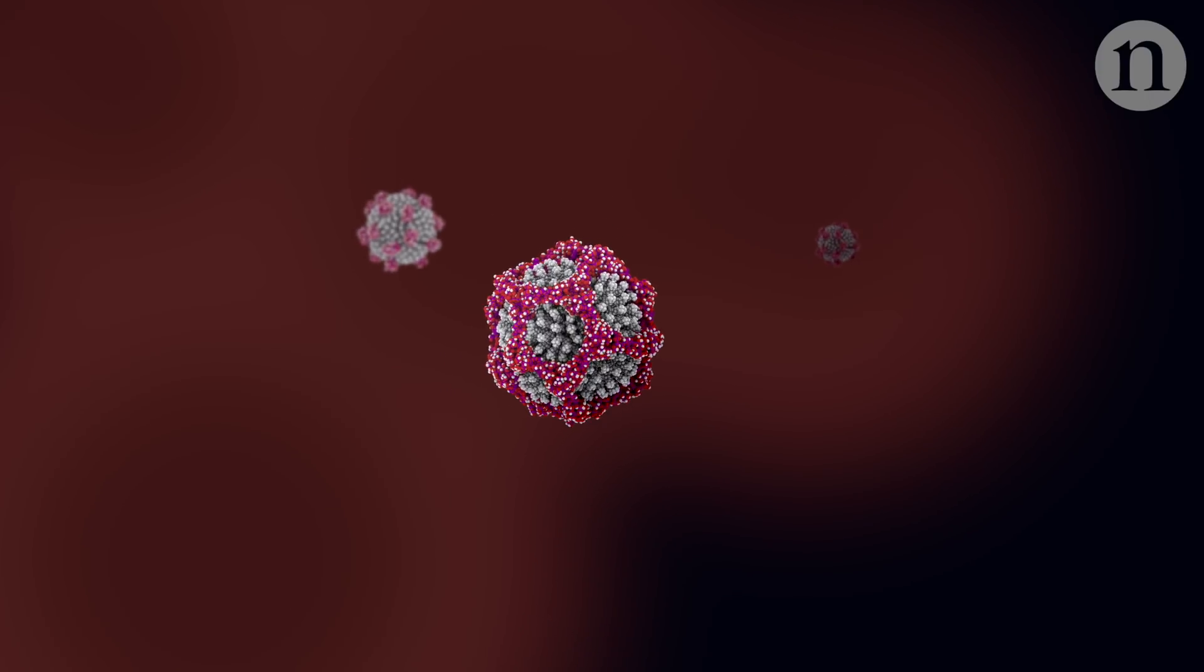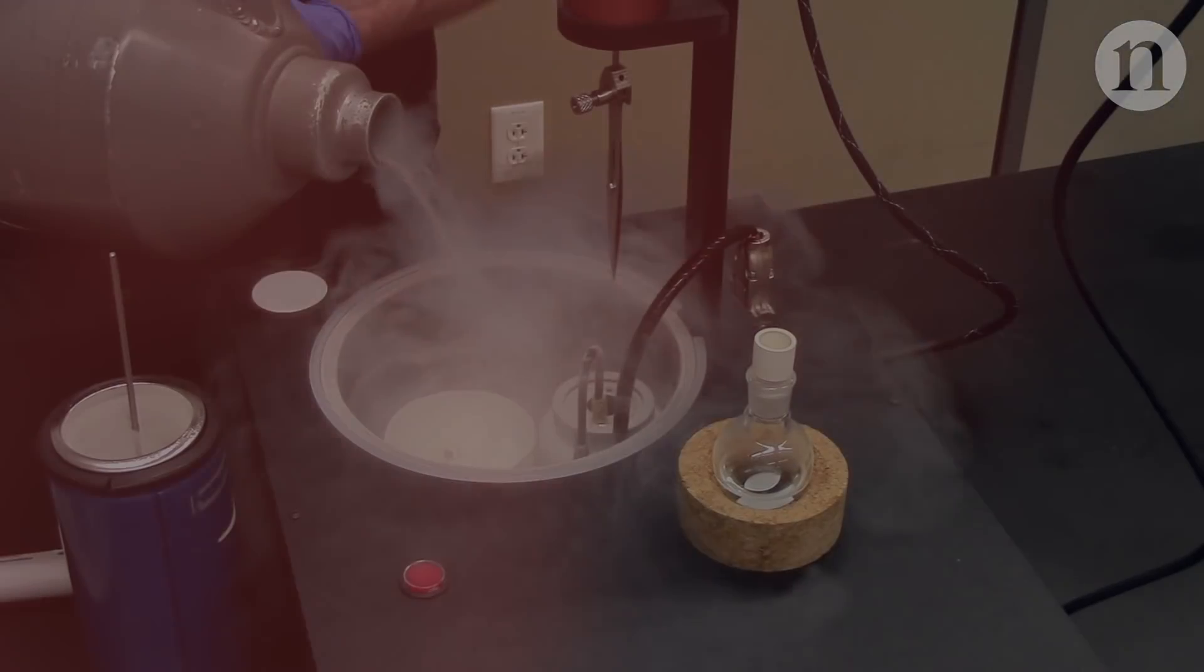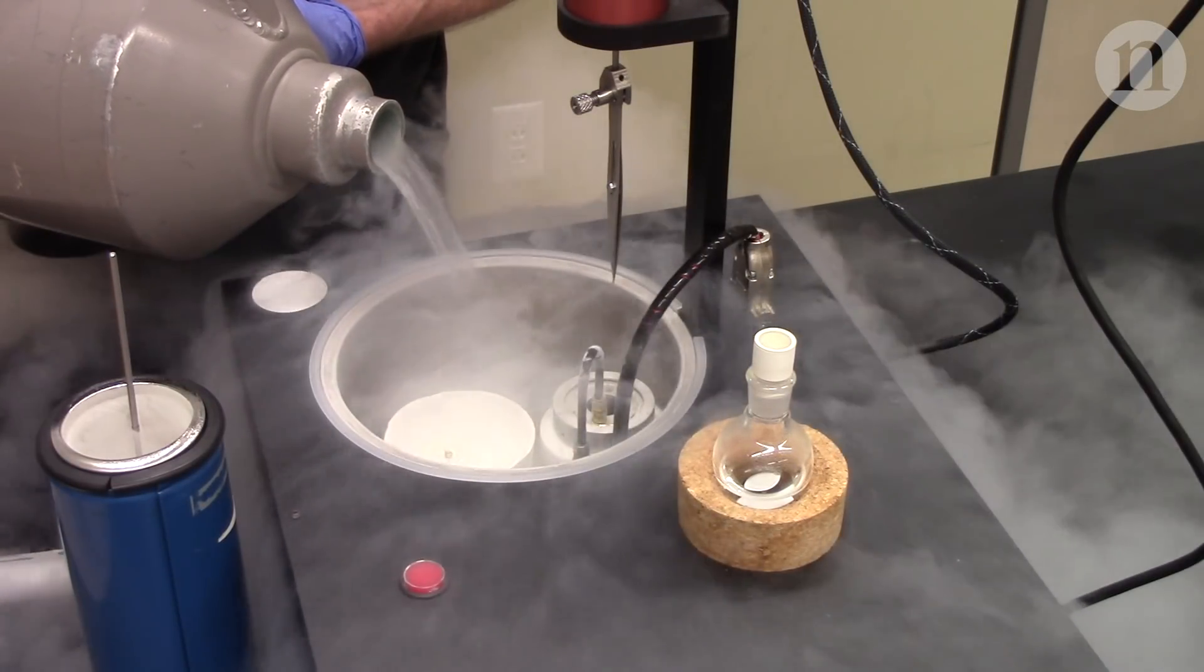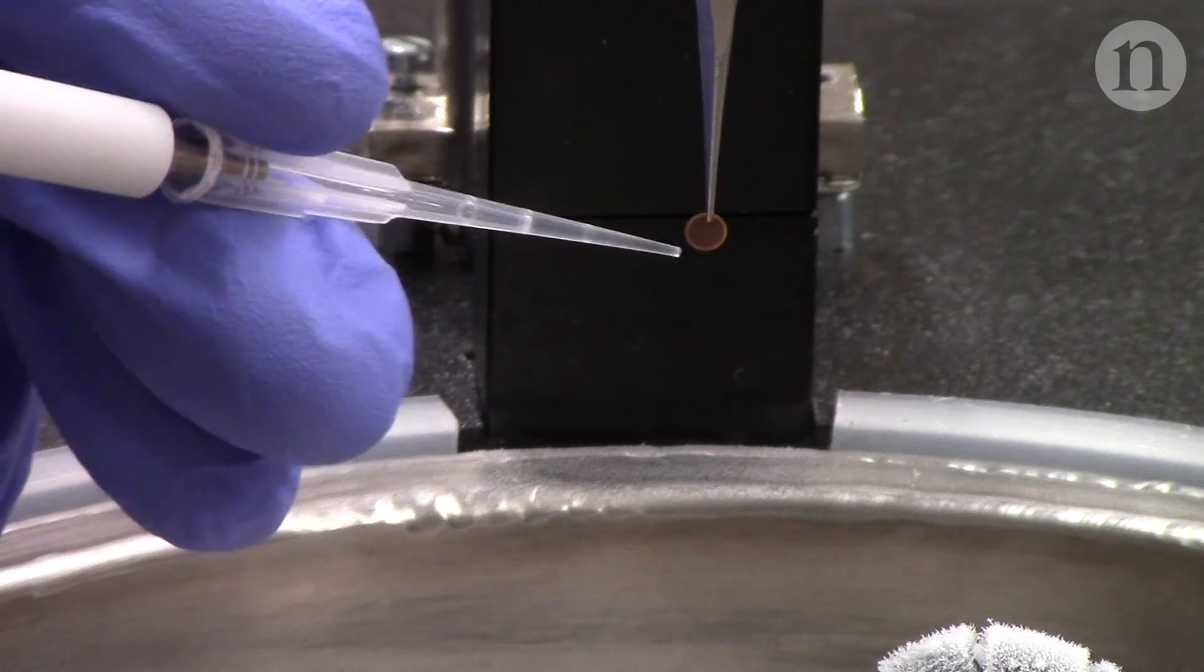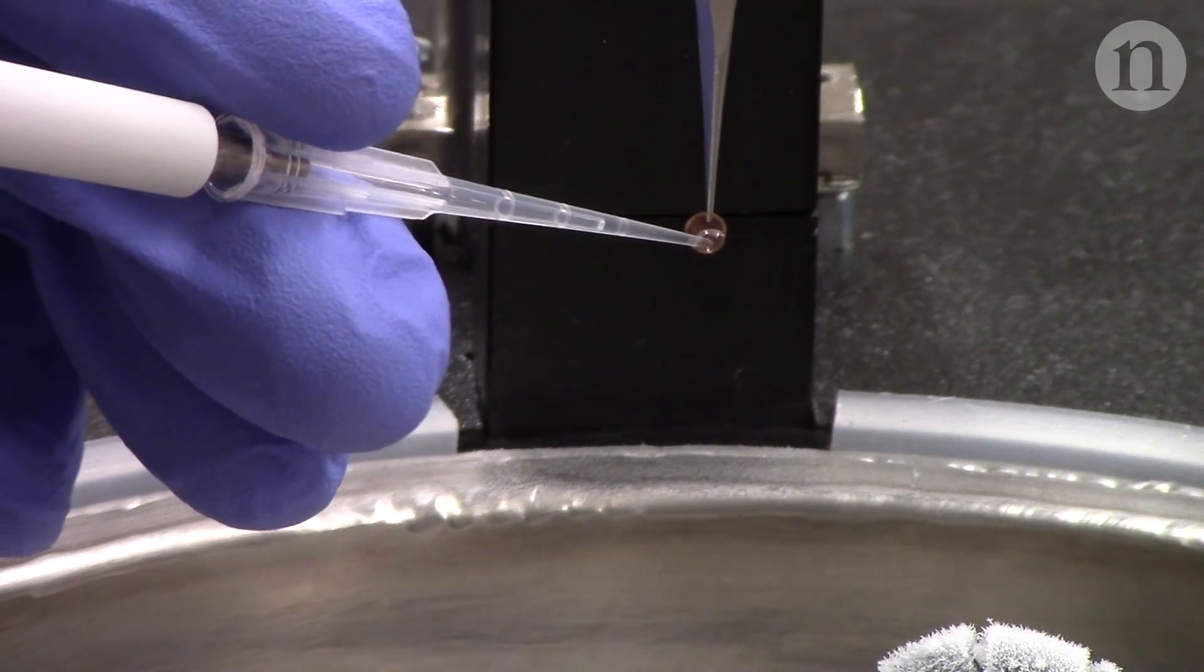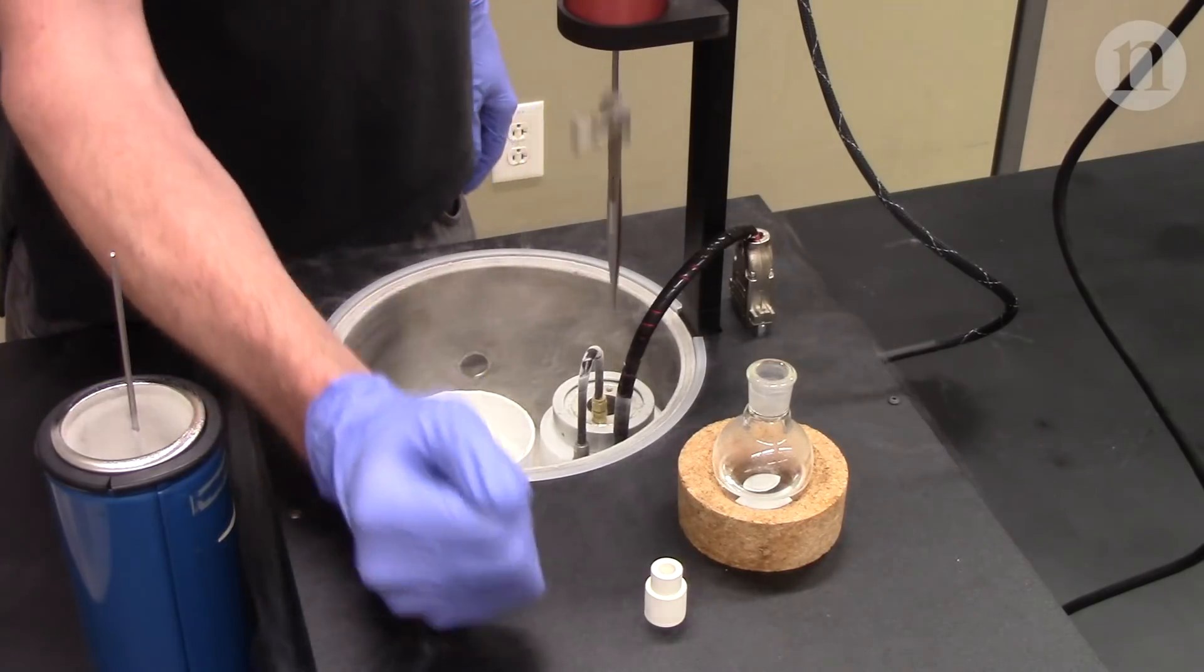They're so small, it's nearly impossible to snap a picture of them. To get that glimpse of the nano-cages, researchers used cryo-electron microscopy. They put their sample on a tiny disc and plunge it into liquid nitrogen, flash-freezing it.